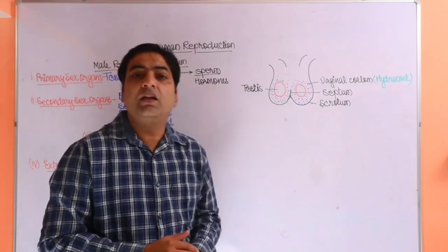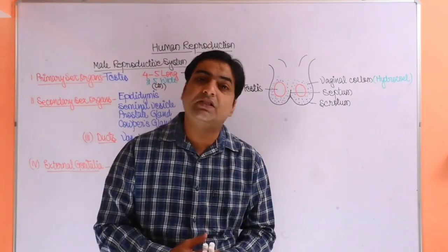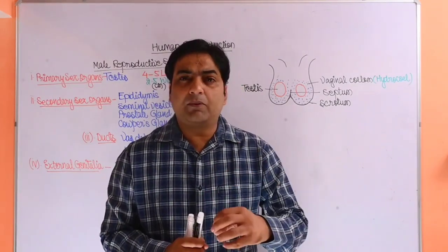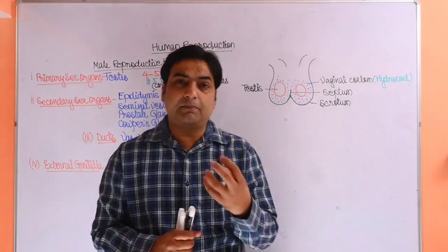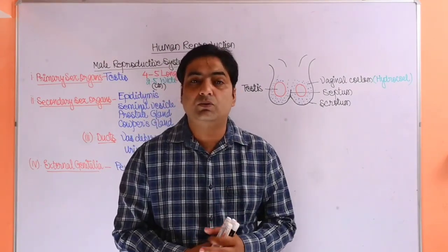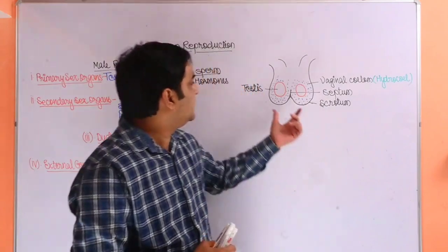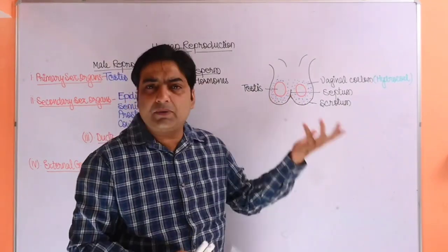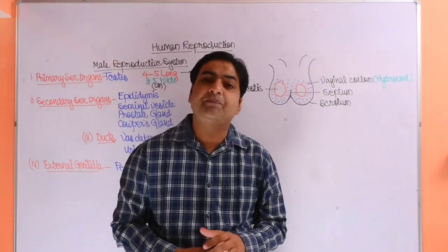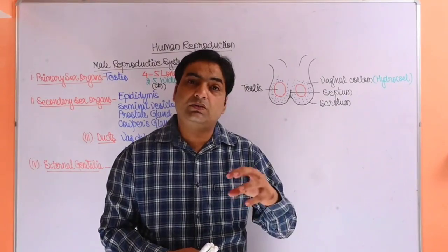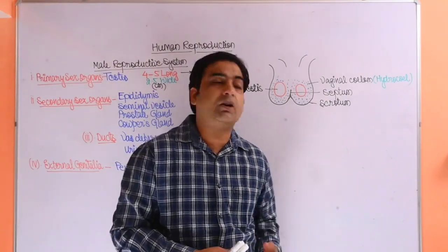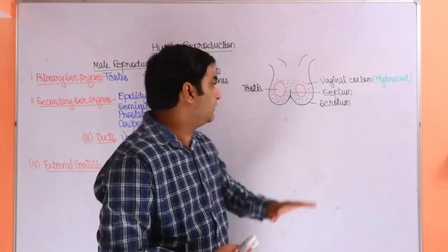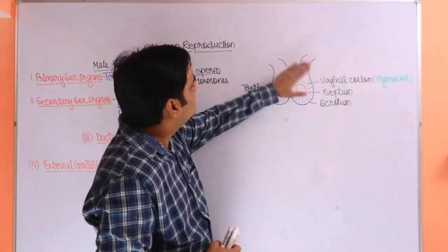The testes are outside the abdominal cavity because our body temperature is 2 degrees higher, and at lower temperature the activity is better. The synthesis of sperm is possible only at almost 2 degrees lower temperature than the body temperature. This is why it lies outside of the abdominal cavity.